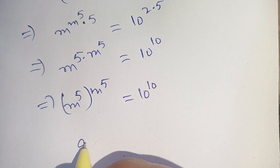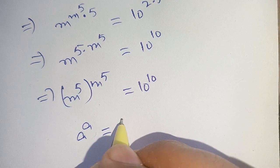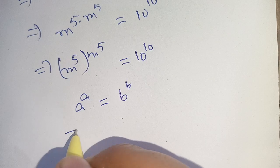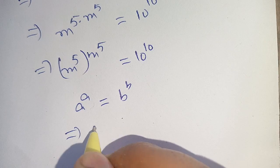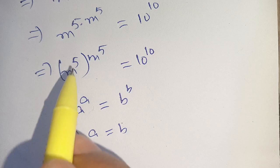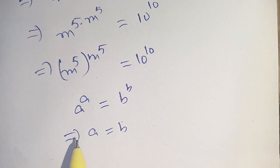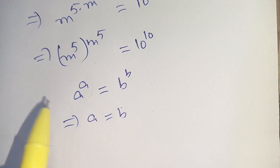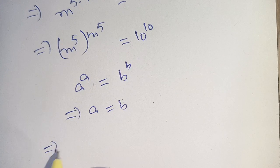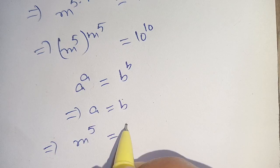Now it is in the form of a raised to the power a is equal to b raised to the power b. If this identity exists, it implies a is equal to b. Here we suppose a is equal to m raised to the power 5 and b is equal to 10. Now on comparing a is equal to b, we have m raised to the power 5 is equal to 10.